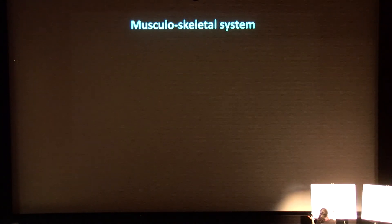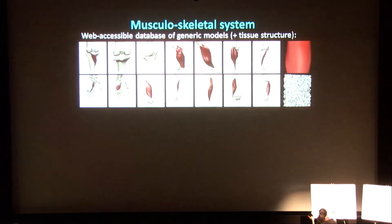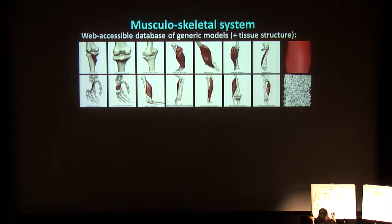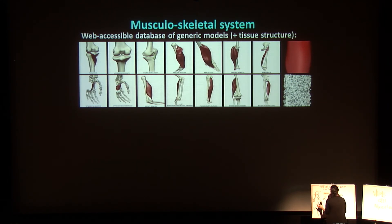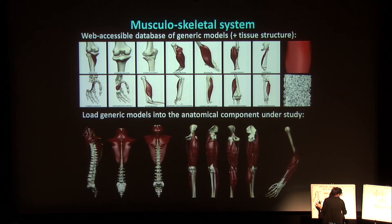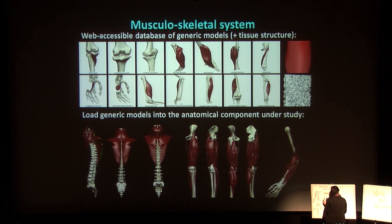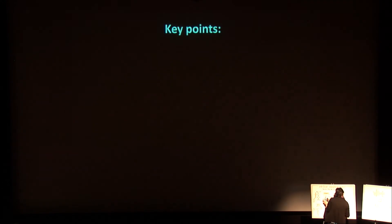It's very useful to be building libraries of components. For the musculoskeletal system, we build libraries of all the muscles and bones in the body with both the geometry, anatomy, and structure, and then assemble those into models depending on the particular use for answering biomechanics questions. This concept of frameworks being able to build modules that you can then assemble for a particular question is important.